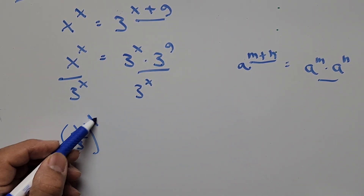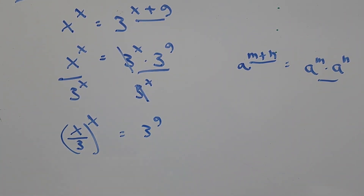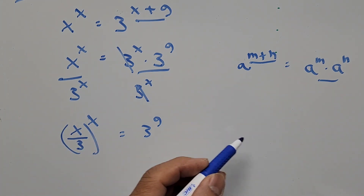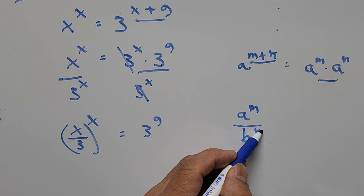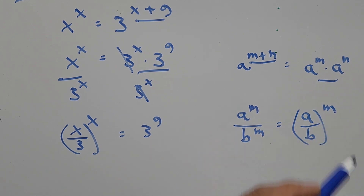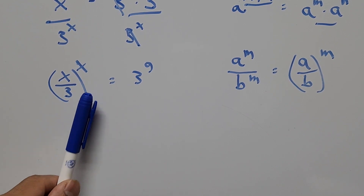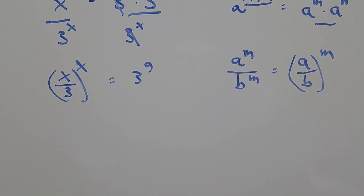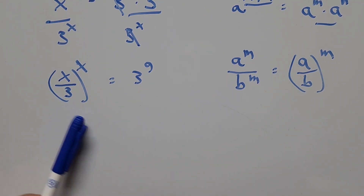Dividing both sides by 3 to the power of x, the left-hand side becomes x divided by 3 to the power of x, and the right-hand side cancels to give 3 to the power of 9. On the left-hand side we use the exponent rule: a to the m divided by b to the m equals (a divided by b) to the m. So our base becomes x divided by 3, with exponent x.